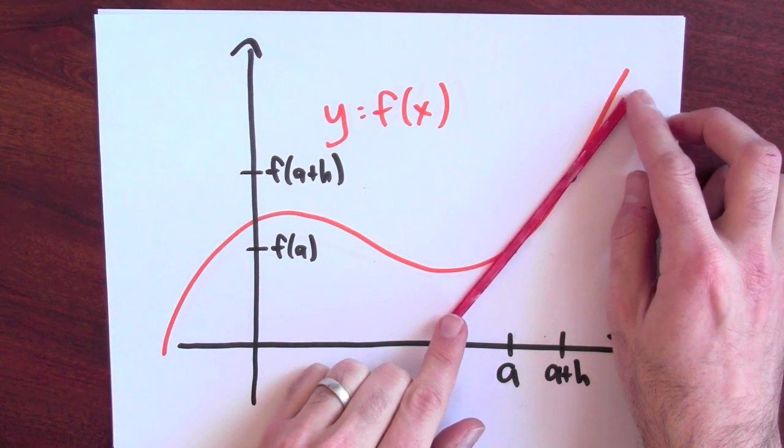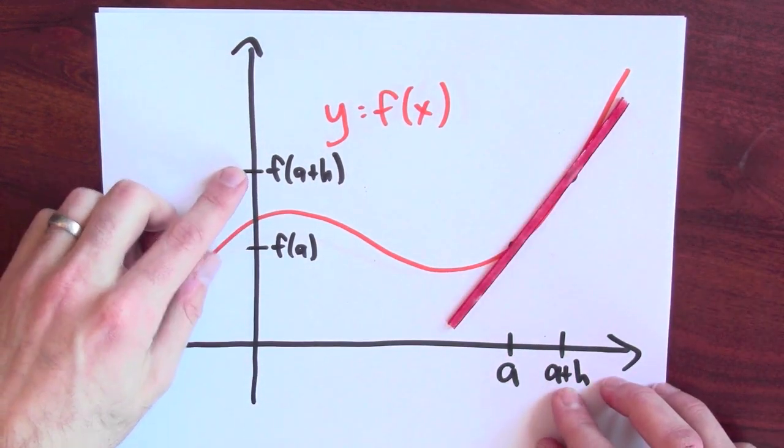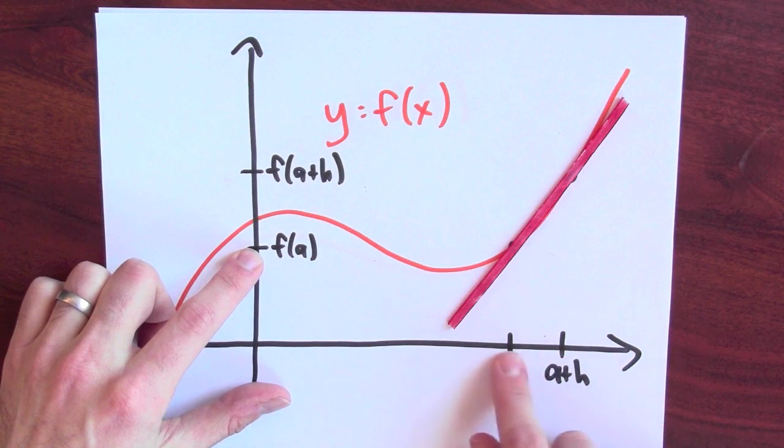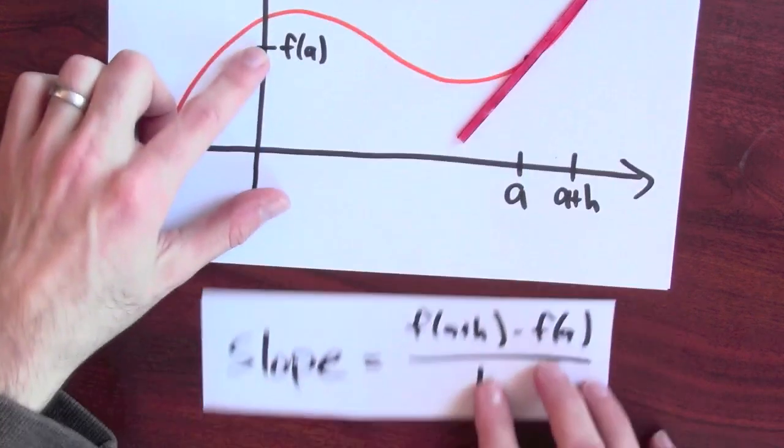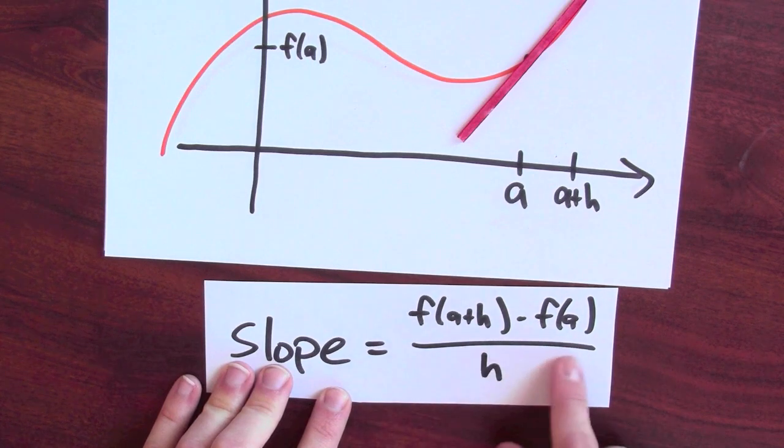Okay, so what's the slope of this secant line? Well, the rise is F of A plus H minus F of A. The run is H. So the slope of that secant line is F of A plus H minus F of A divided by H.